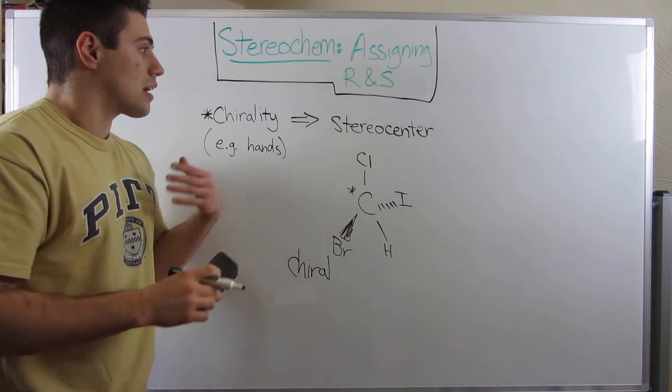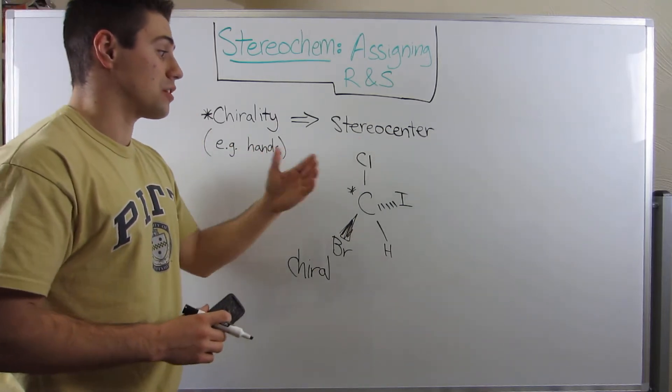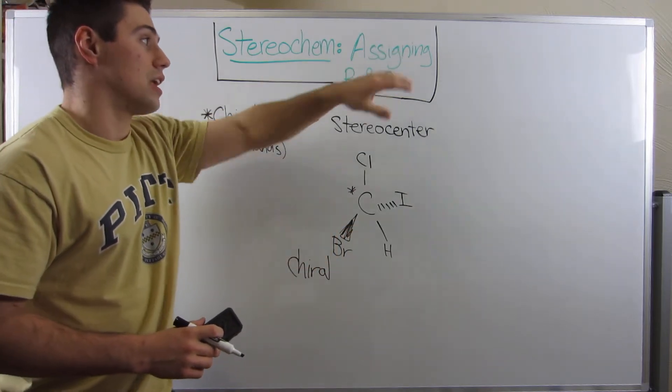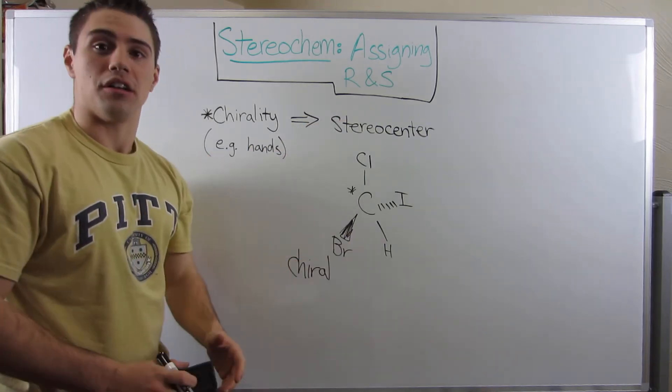Okay, so now that we've kind of shown you what chirality is and what a stereocenter looks like and how to identify one, I really want to get into assigning R and S. There's a few rules, but it's nothing you can't handle. So I'm going to erase some stuff and we'll jump right into it.